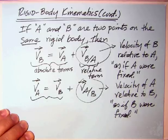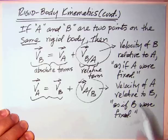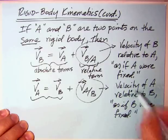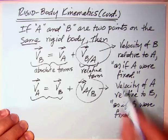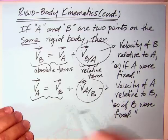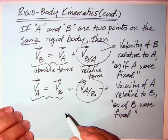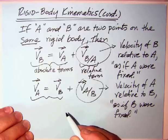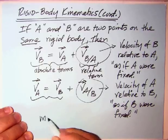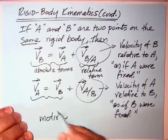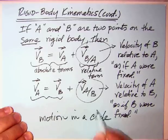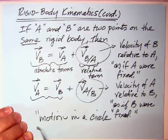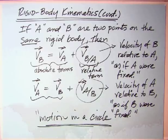Which again says it's the velocity of A relative to B as if B were fixed. And what you're really talking about then in these particular two terms is that if you're holding one of the points fixed and the other one can move, it can only move in a circle. So what you really need to do is talk about motion in a circle. And that's what we're going to do on the next page, and that's how we're going to evaluate those two relative terms.